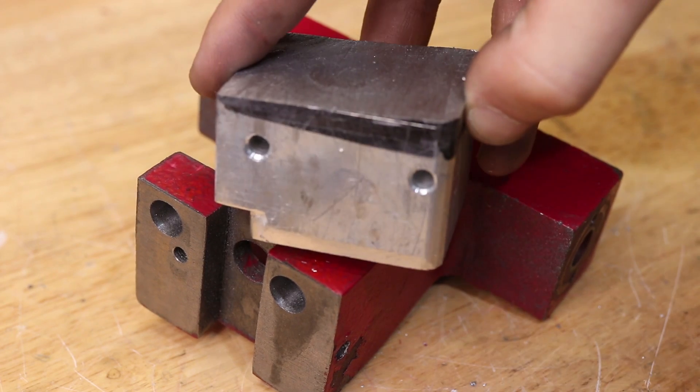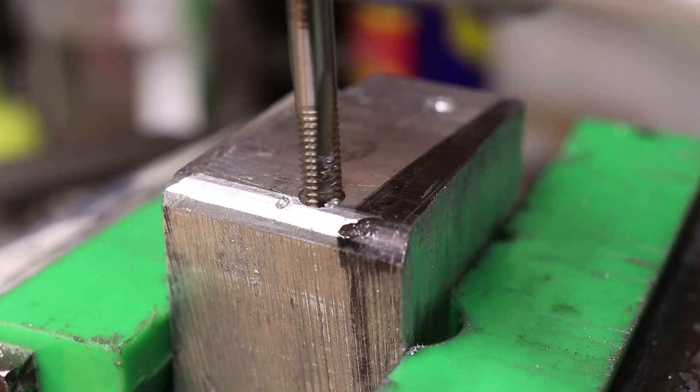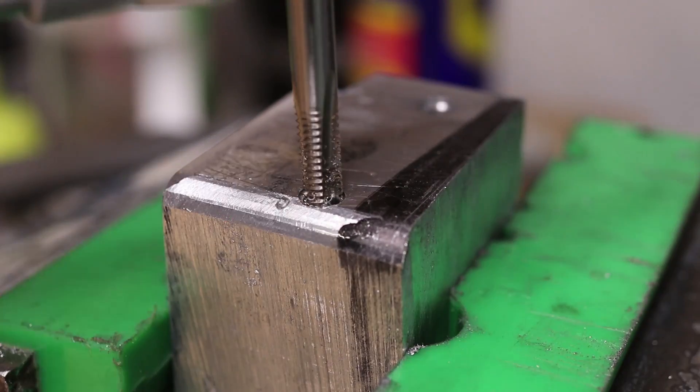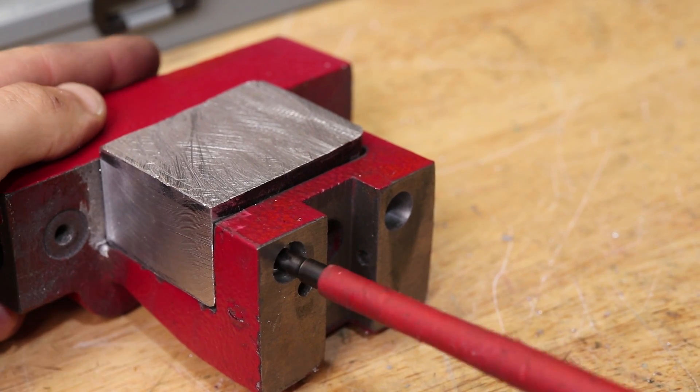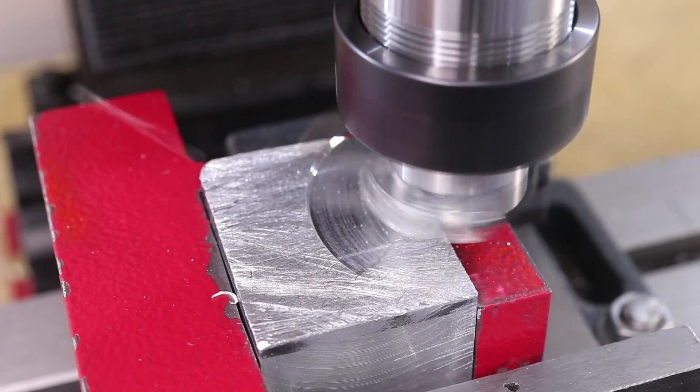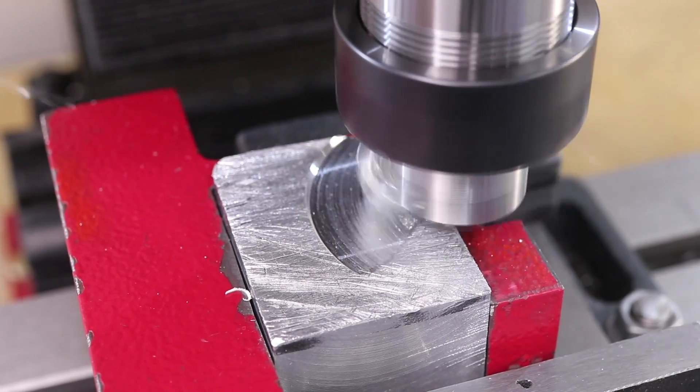The aluminum is then removed and tapped for M6. With the insert bolted in I'll use the fly cutter to remove the excess aluminum.